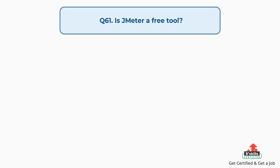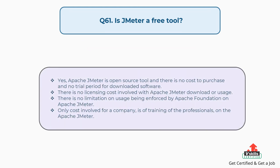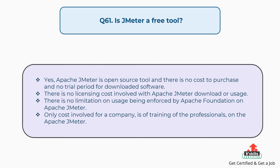Question 61: Is JMeter a free tool? Yes, Apache JMeter is open source with no purchase cost and no trial period. There is no licensing cost involved with downloading or using JMeter, and Apache Foundation enforces no usage limitations. The only cost involved for a company is training professionals on Apache JMeter.